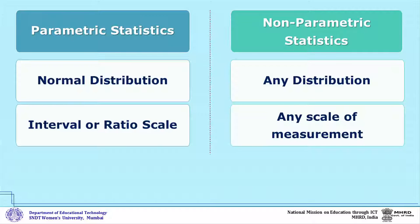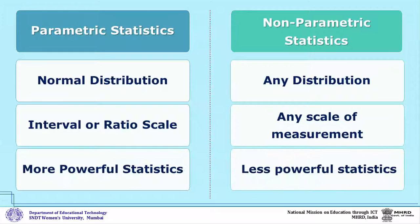In case of non-parametric statistics, your data can be on any scale — that is either a nominal scale, ordinal scale, interval scale, or ratio scale. The last difference is that parametric statistics is more powerful, whereas non-parametric statistics is less powerful.